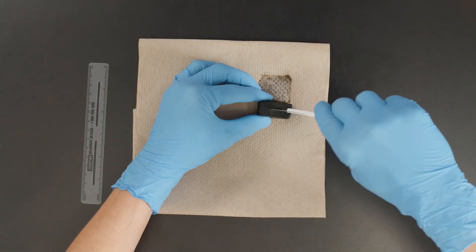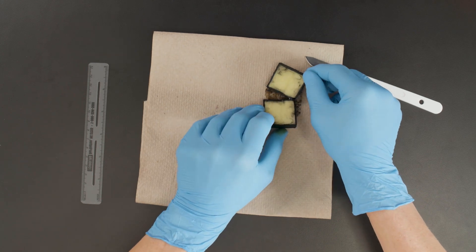First, cut the block in half lengthwise. Separate the two halves to view the interior of the block.